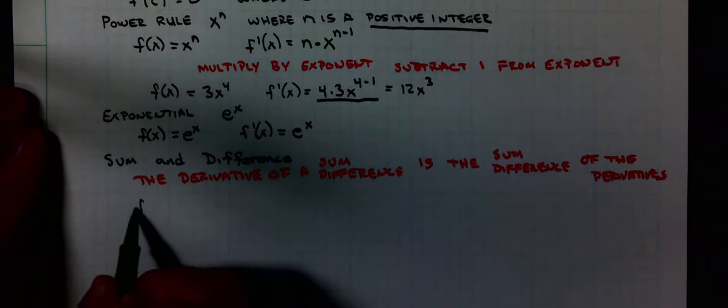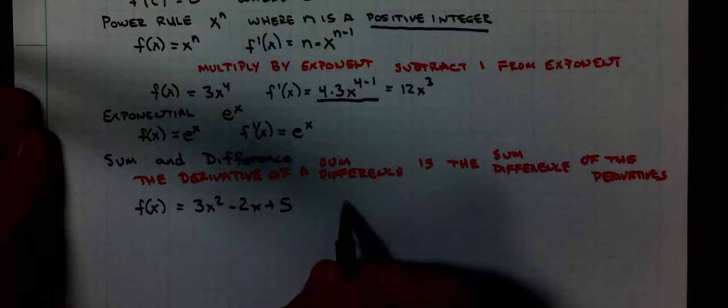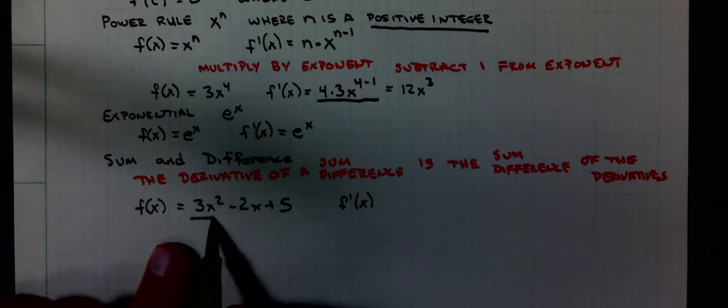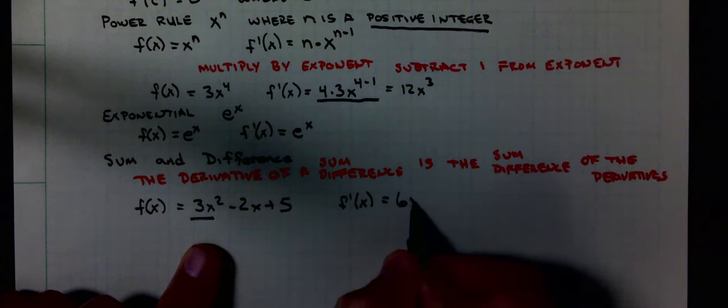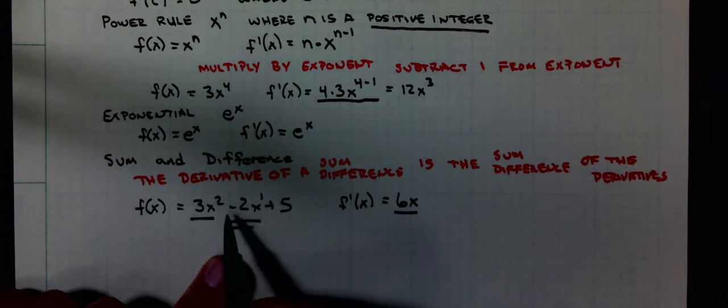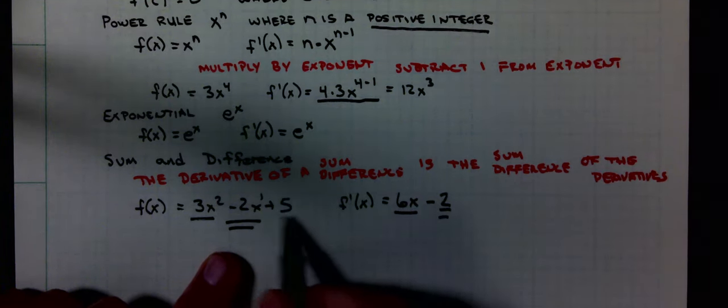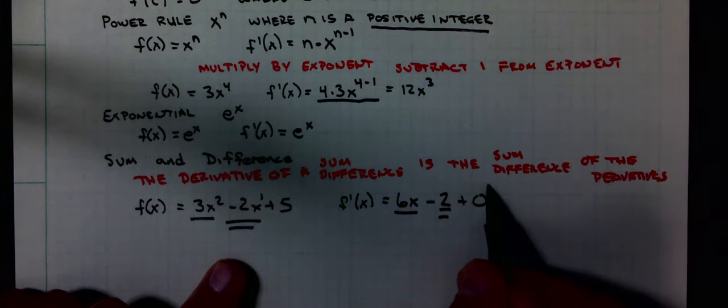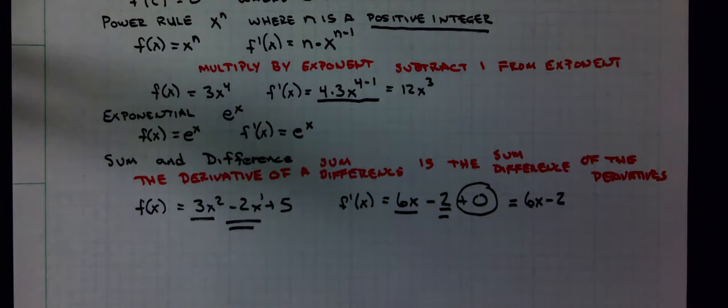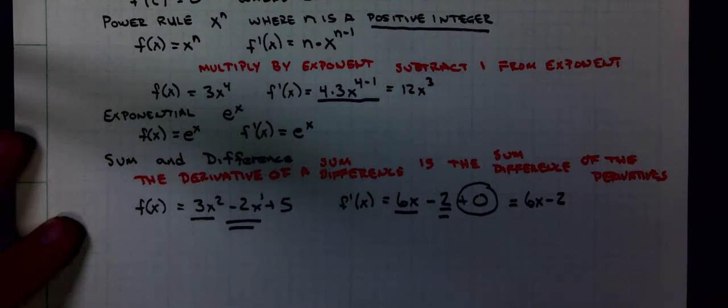For example, if I have f of x equals 3x squared minus 2x plus 5, f prime of x is: I'm just going to take the derivative of each part. First part is 6x, second part is negative 2, and the derivative of the five, which is a constant function, is zero. I'm not going to require you to show me that.